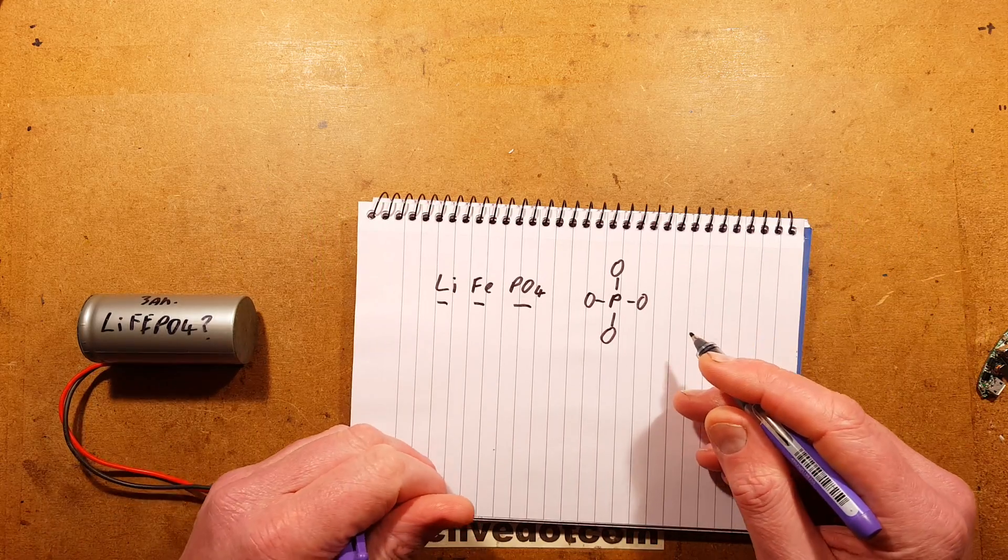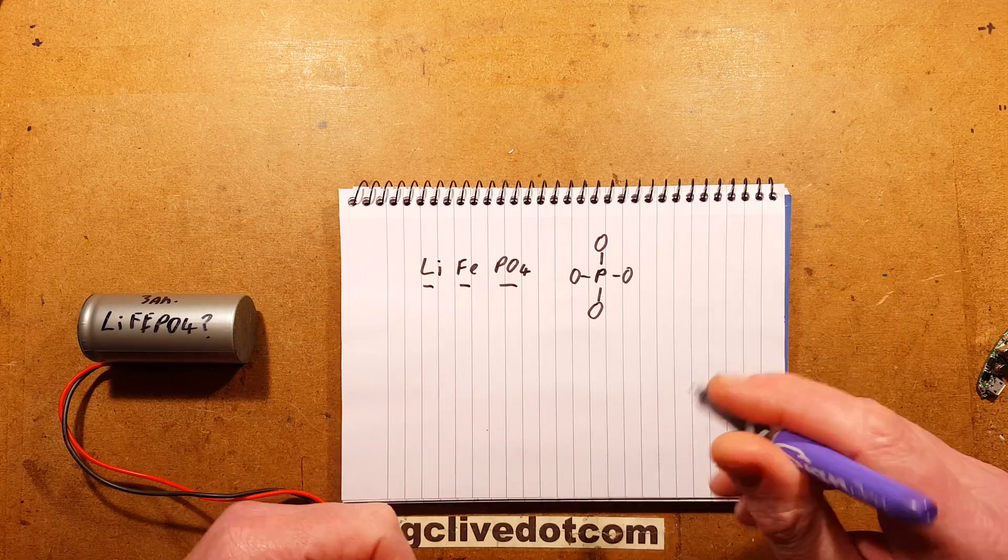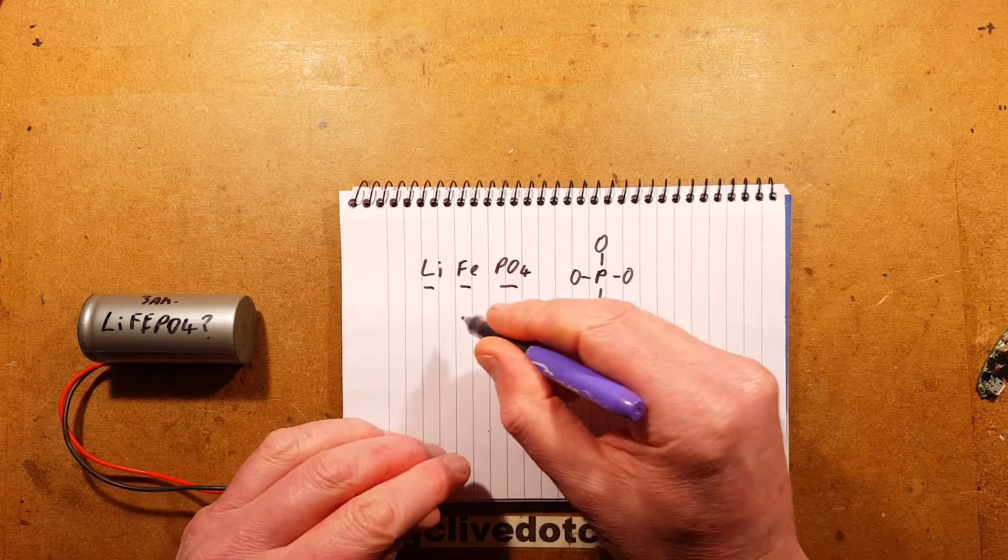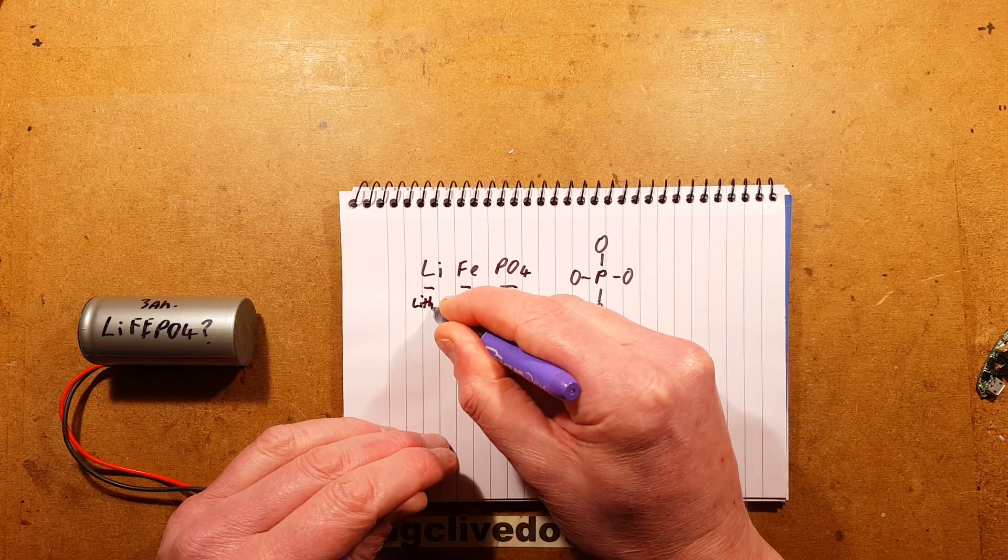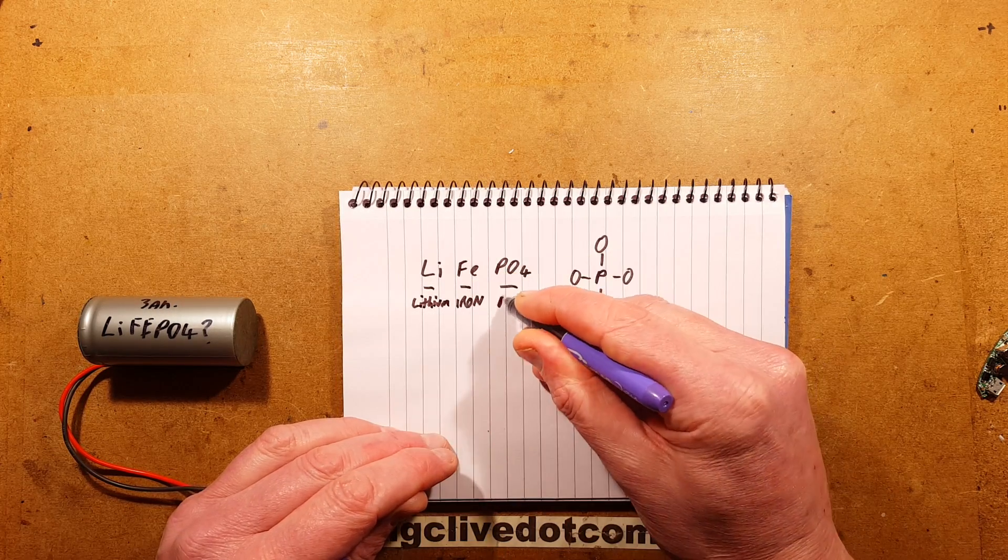No real reason to show you that. You don't really need to know that. It's just useful to know why it says PO4. This is iron and this is lithium. And that's phosphate.